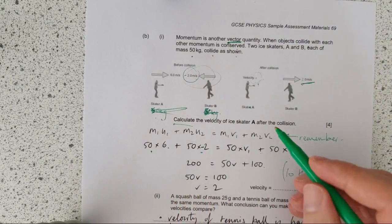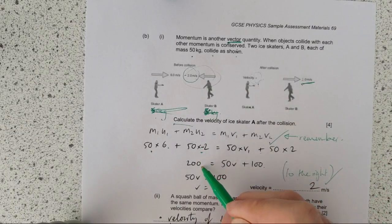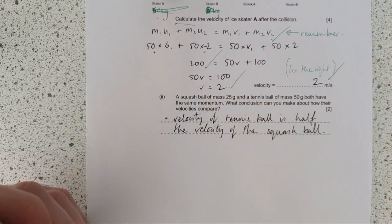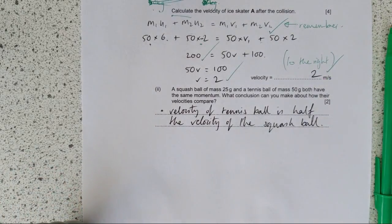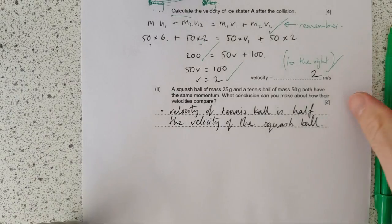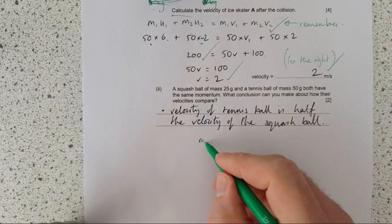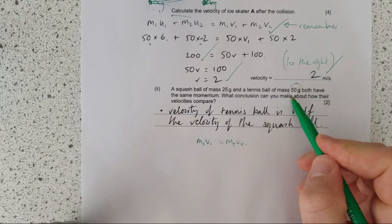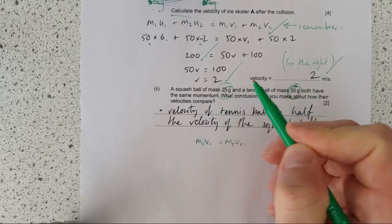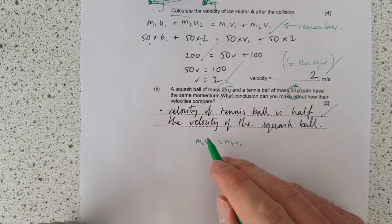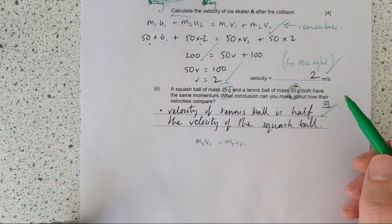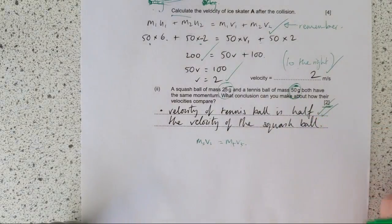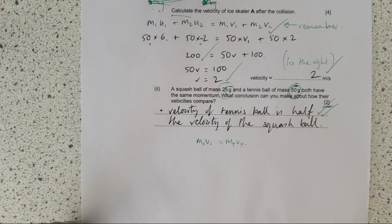A squash ball of mass 25 grams and a tennis ball of mass 50 both have the same momentum. What conclusion can you make about their velocities? Well, they both have the same momentum. It means the M of the squash ball times the velocity of the squash ball is equal to the M of the tennis ball times the velocity of the tennis ball. And the mass of the tennis ball is twice the mass of the squash ball. So the velocity of the tennis ball must be half the velocity of the squash ball. So actually, you would have got one out of two of these marks if you would have just said the squash ball must be faster. But because you've been given numerical data, you're going to get that factor in there.